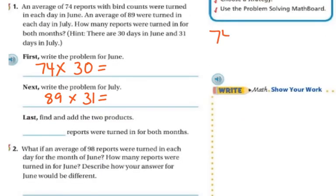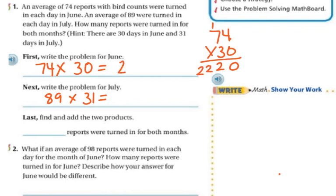So we've got 74 times 30. This is three tens, so I put my zero there and focus on three tens times four ones — that's 12, regroup the one. Three times seven is 21, plus my one is 22. So for June, I get 2,220.